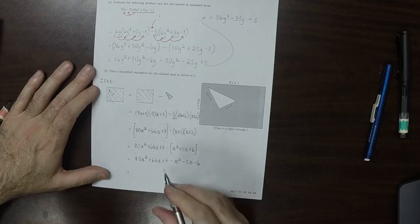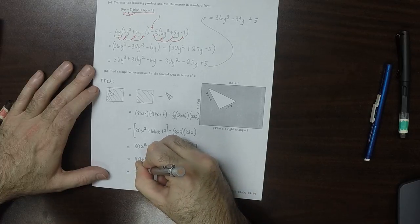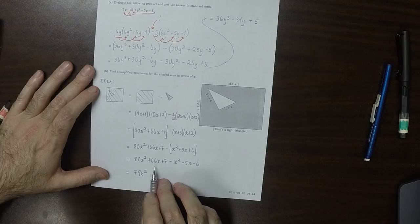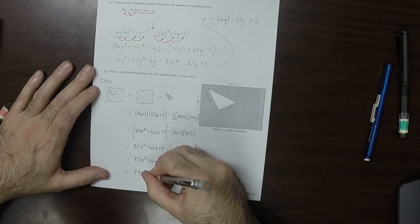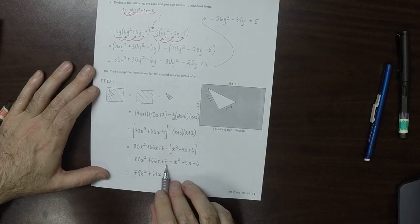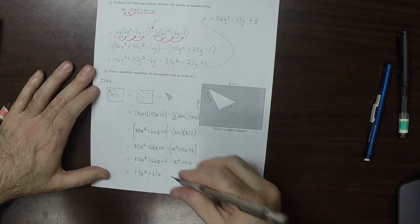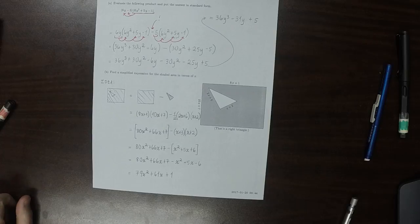Collecting like terms now, that would be 79x squared. 66x minus 5x is 61x. And then 7 minus 6 is 1. And that's the answer.